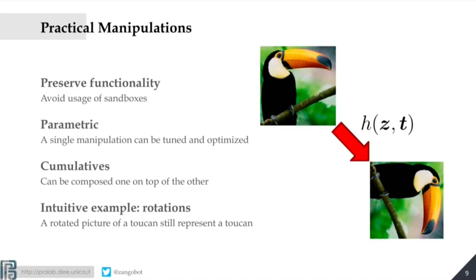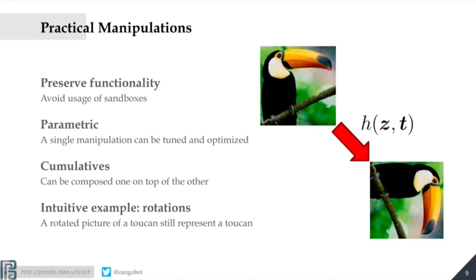Think of H as a rotation and T as the degrees. Now I'm tilting this image by 90 degrees and it's still a toaster — the functionality is preserved but the content is now different. To bridge this gap into programs, we first need to describe how programs are stored in memory. In Windows — spoiler — from now on I'm only talking about Windows malware detection and static Windows malware detection, where a machine learning model recognizes malware just from the structure.